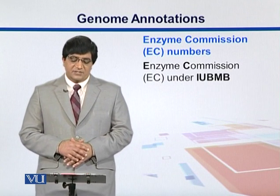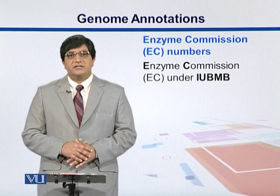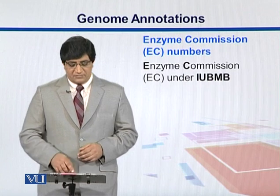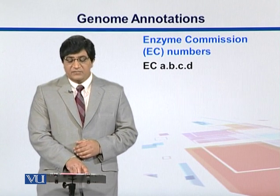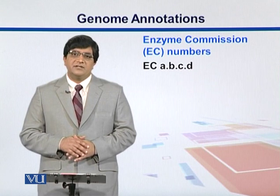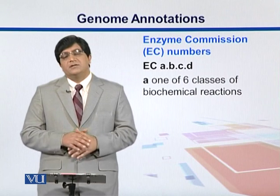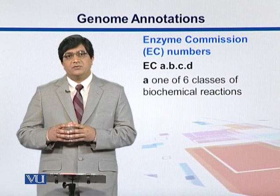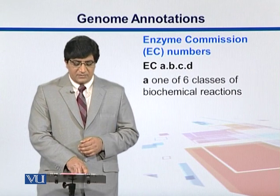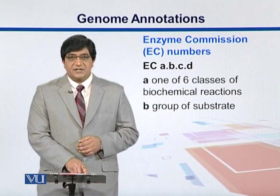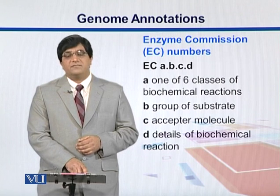Another scheme is Enzyme Commission numbers, or EC numbers, put forward by the Enzyme Commission working under the IUBMB — International Union for Biochemistry and Molecular Biology. Enzymes are classified on the basis of the reactions they catalyze. We have a four-digit scheme: the first digit (A) tells us the enzyme belongs to one of six classes of biochemical reactions; B is the group of substrate it acts on; C tells us about the acceptor molecule; and D is the detail of that biochemical reaction.